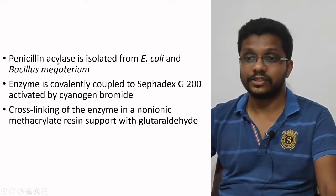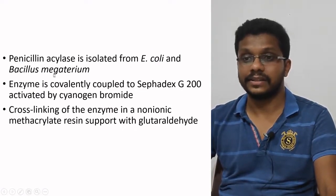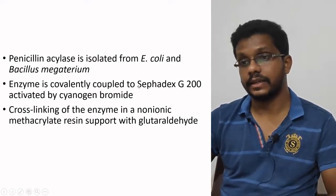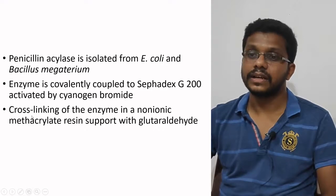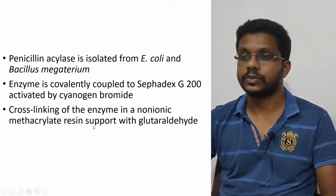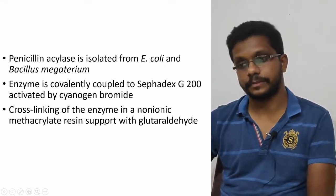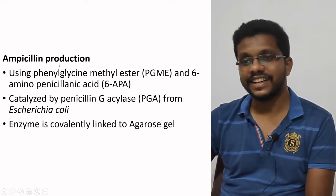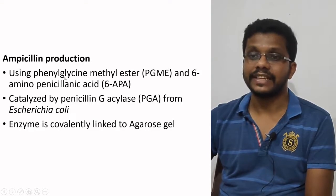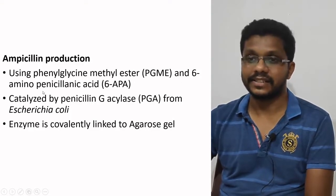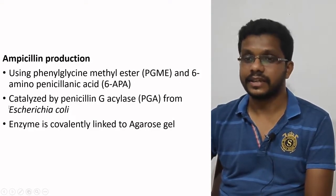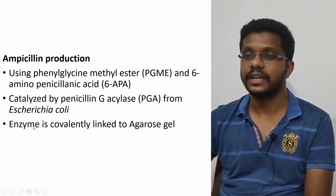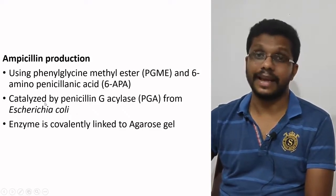Penicillin G-acylase is isolated from Escherichia coli and Bacillus megaterium. The enzymes are covalently linked to Sephadex, and cross-linking is also done to increase stability. Ampicillin can also be produced using this method, for which we use phenylglycine methyl ester and 6-aminopenicillanic acid along with penicillin G-acylase from E. coli to make semi-synthetic ampicillin.